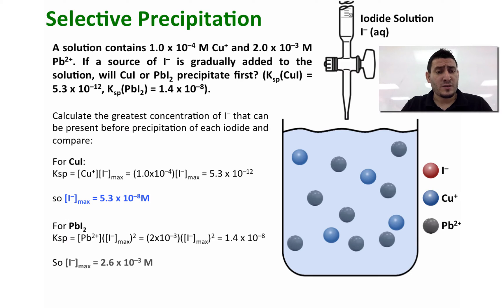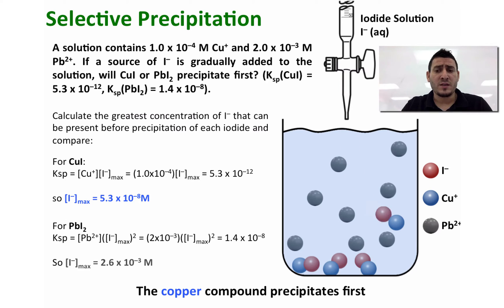Looking at these two concentrations, we can see that the amount of iodide needed to precipitate the copper 1 is very small compared to the amount of I minus needed to precipitate the lead 2. Therefore, when we start adding I minus, the copper compound will precipitate first because it doesn't need that much I minus to precipitate.